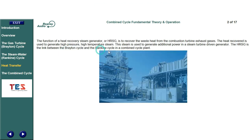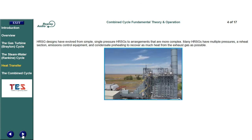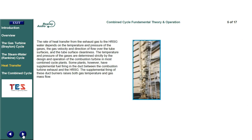HRSG designs have evolved from simple, single-pressure HRSGs to arrangements that are more complex. Many HRSGs have multiple pressures, a reheat section, emissions control equipment, and condensate preheating to recover as much heat from the exhaust gas as possible. The rate of heat transfer from the exhaust gas to the HRSG water depends on the temperature and pressure of the gases, the gas velocity and direction of flow over the tube surfaces, and the tube surface cleanliness.